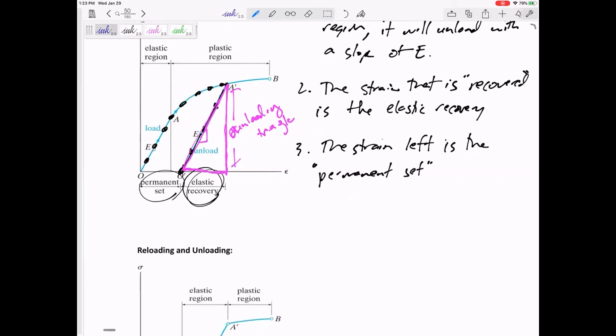So how about this? The strain when loaded, so this strain right here, is equal to the permanent set plus the elastic recovery. So if when it was loaded up here, it had this strain of Epsilon, you can calculate the elastic recovery, and what's left over is the permanent set.